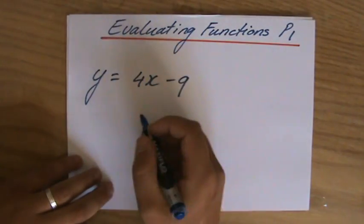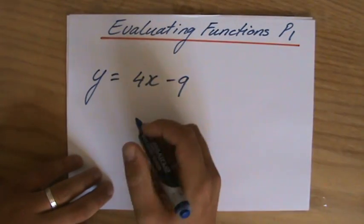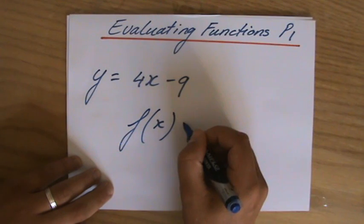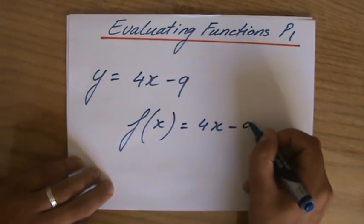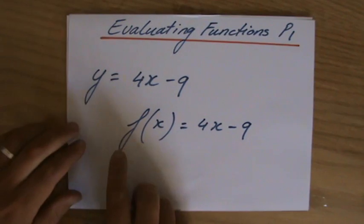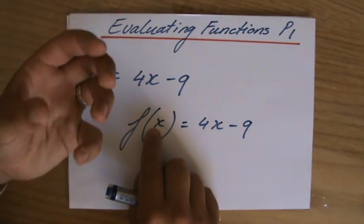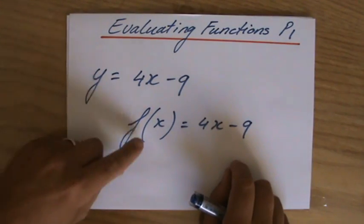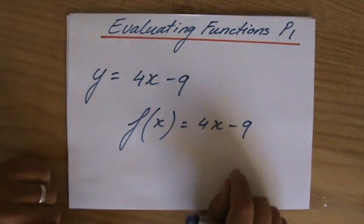But from now on, we will mostly see in our books the notation f bracket x equals 4x minus 9, which means the function where x is the variable equals 4x minus 9. So this is actually, it means the same thing.